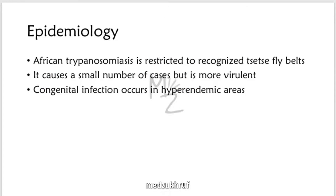Epidemiology. African Trypanosomiasis is restricted to recognized tsetse fly belts. Trypanosoma brucei rhodesiense causes a smaller number of cases but is more virulent. Congenital infection occurs in hyperendemic areas.